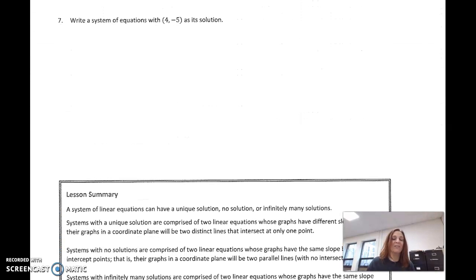One more real quick. Write a system of equations with 4, negative 5 as its solution. As before, you've seen me do a problem like this before. Start with this x value and this y value, 4, negative 5, and then do something to them. 2 times 4 plus 3 times a negative 5. Figure out what it equals. Grab a calculator. Type in 2 times 4 plus 3 times negative 5, and I get negative 7. What I can do there, then, is just replace this with x and y. This is 2 times x plus 3 times y equals negative 7.